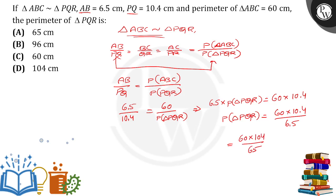Here 5 cancels 60 for 12 times, 5 cancels 65 for 13 times. Then 13 cancels 104 for 8 times, so 12 into 8 is equal to 96 centimeter.